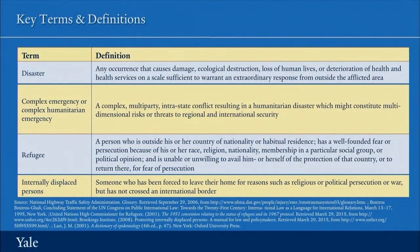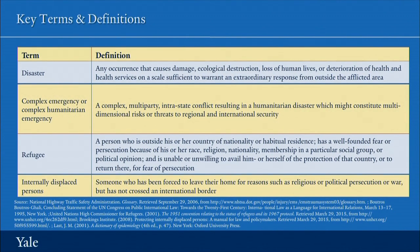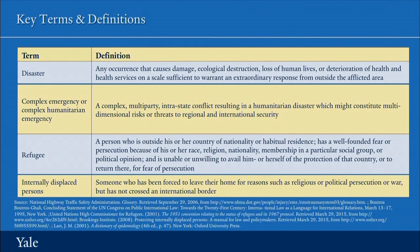A refugee is a person who is outside of his or her country of nationality or habitual residence. They have a well-founded fear of persecution because of their race, religion, nationality, membership in a particular social group, or political opinion. They are unable or unwilling to avail themselves of the protection of that country or to return there for fear of persecution. If someone left Rwanda during the civil war and fled to Zaire, they would be refugees in Zaire, and there is a certain international protection that is accorded to them.